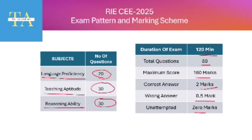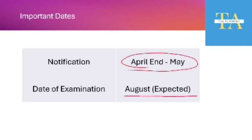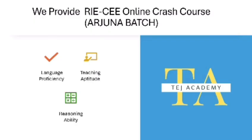Regarding important dates: the RIECE notification usually comes at the end of April or beginning of May. Application forms open at the end of April and remain open until mid-May. The date of examination is usually held in the month of August.